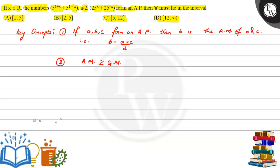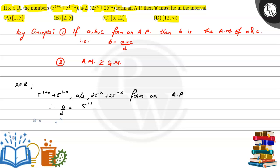Keeping these key concepts in mind, let's now start with the solution. We are given that x belongs to the set of real numbers, and that 5 raised to (1 plus x) plus 5 raised to (1 minus x), comma a divided by 2, comma 25 raised to x plus 25 raised to minus x form an arithmetic progression. Using the first key concept, a divided by 2 equals [5 raised to (1 plus x) plus 5 raised to (1 minus x) plus 25 raised to x plus 25 raised to minus x] divided by 2.